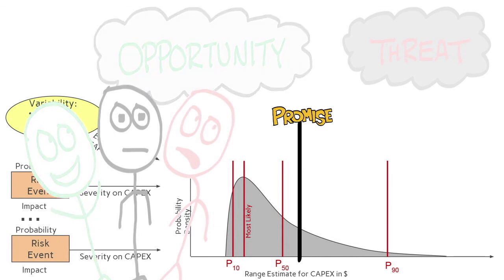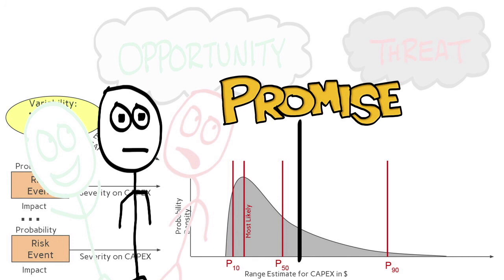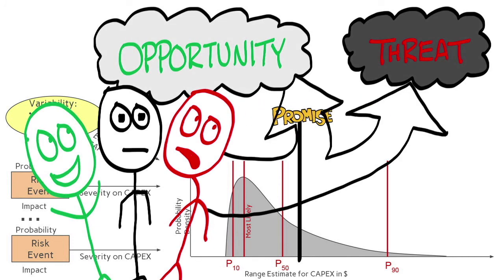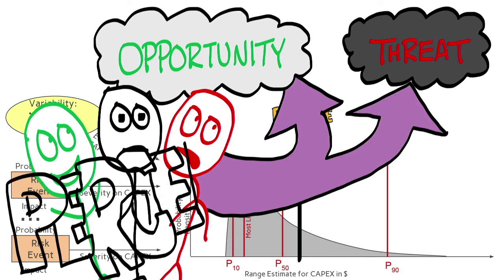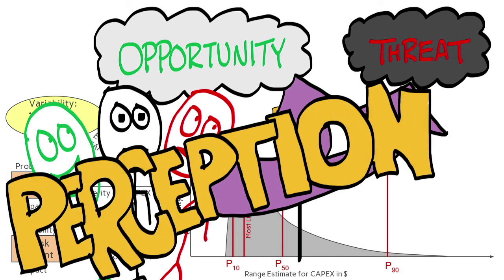Still others will focus on the expected or promised outcome and will tend to dismiss outliers. The takeaway is that people's perception of the riskiness of any given opportunity—that is, the relative balance between opportunity and threat—can vary widely.